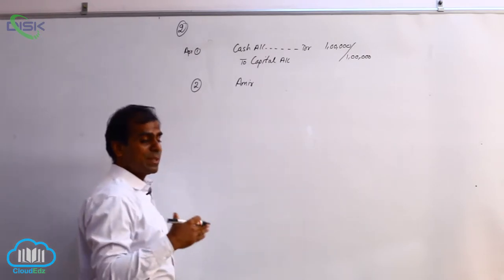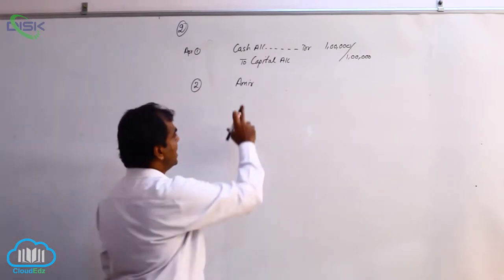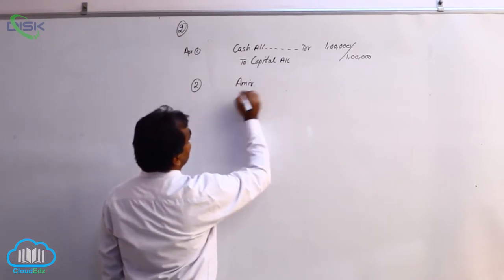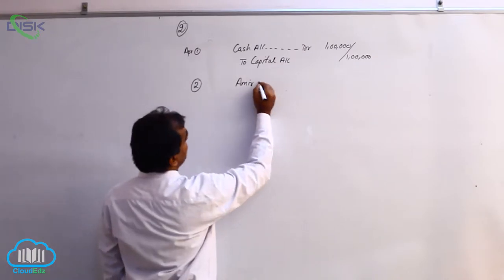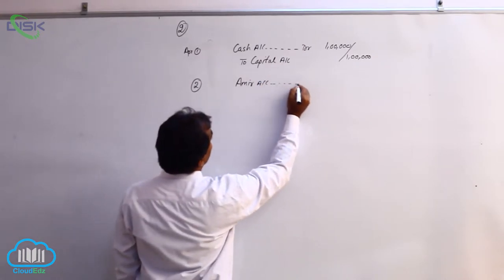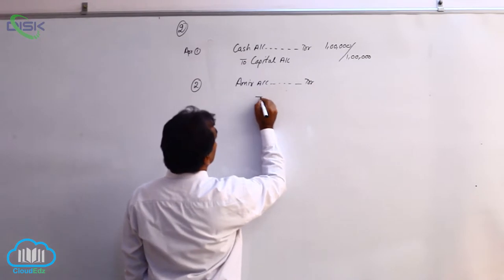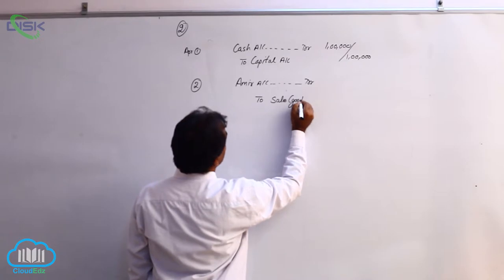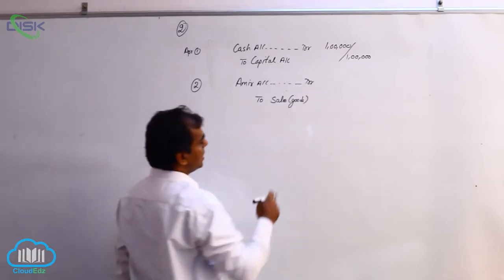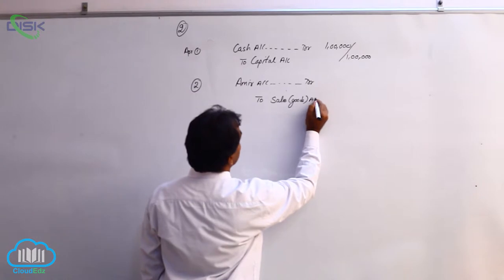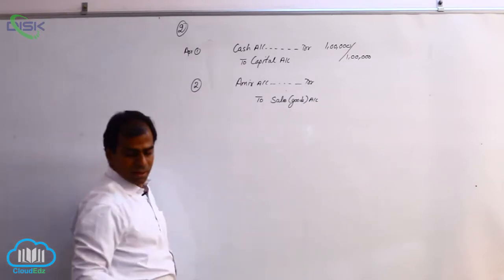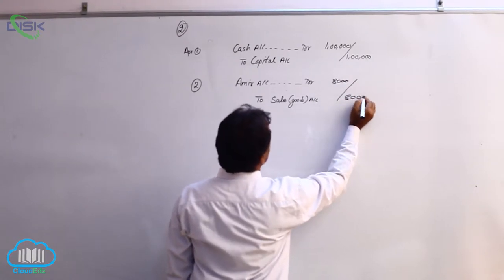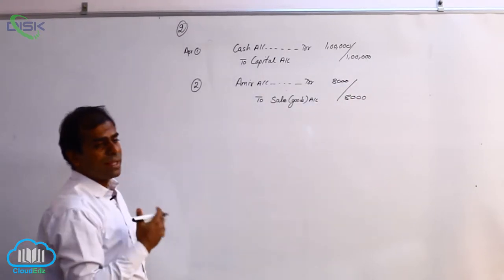Amer has received the goods, so Amer is a personal account. The rule of personal account says debit the receiver. Since Amer is the receiver of the goods, we say Amer account debit to sales. Sales represents goods going out, and the real account rule is credit what goes out — that is why we are crediting sales. The amount is eight thousand, and the narration would be 'being goods sold to Amer on credit.'